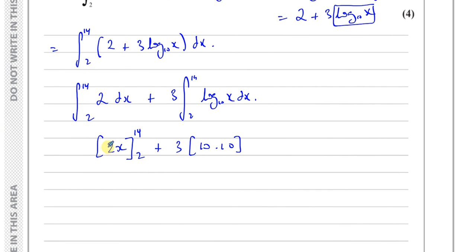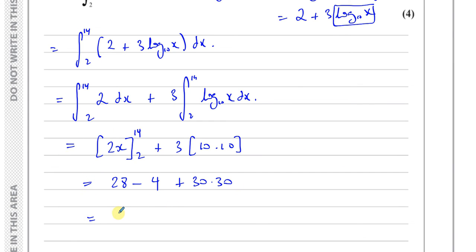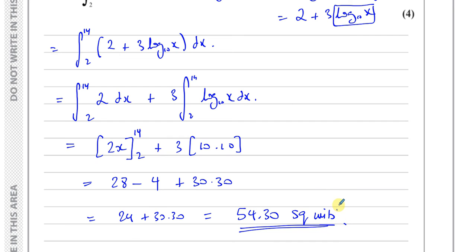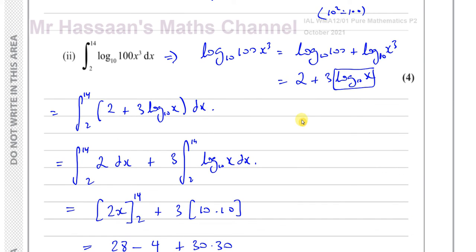Integrating 2 with respect to x gives 2x, evaluated between 14 and 2: that's 2 times 14 minus 2 times 2, which is 28 minus 4 = 24, plus 3 times 10.10 which is 30.30. So that gives 24 plus 30.30 = 54.30 square units. That's the answer to part C part 2, and that concludes question number 3 from this paper.